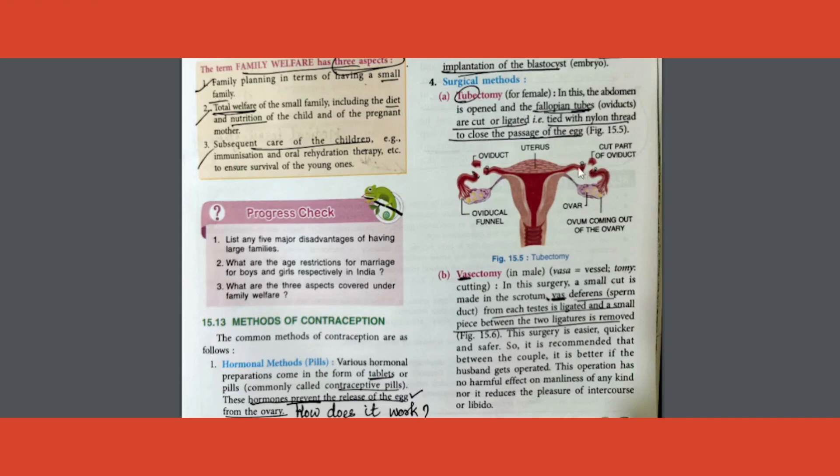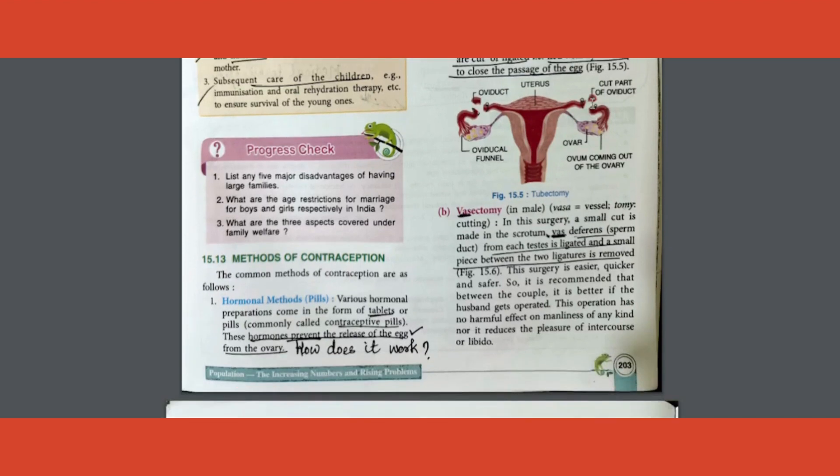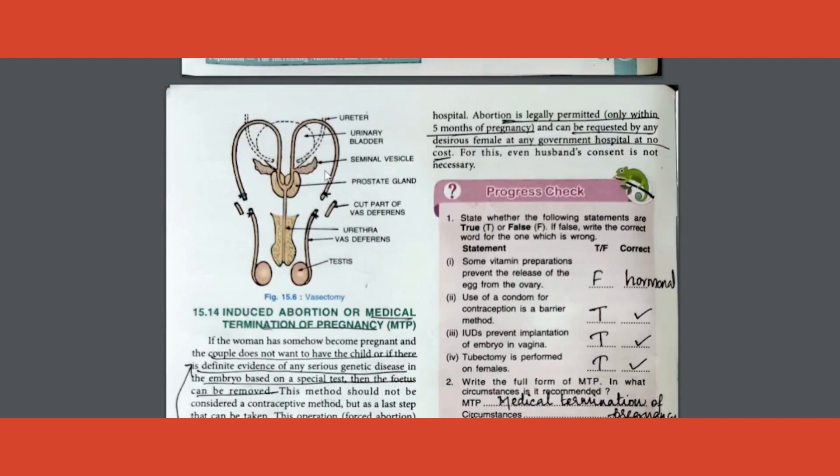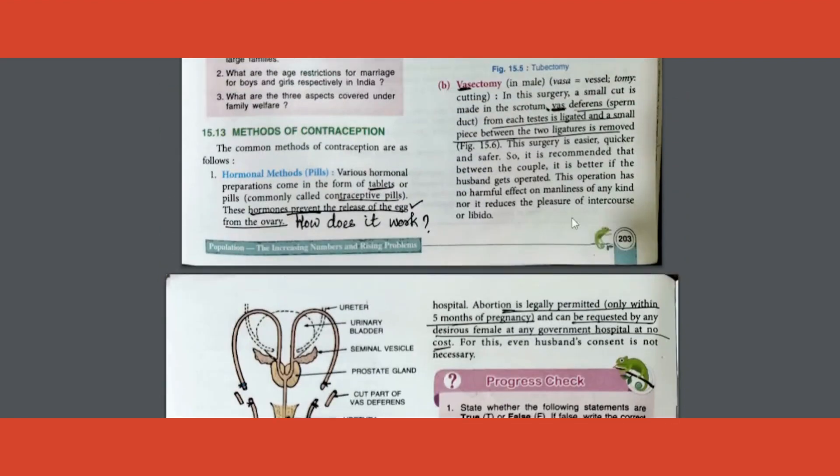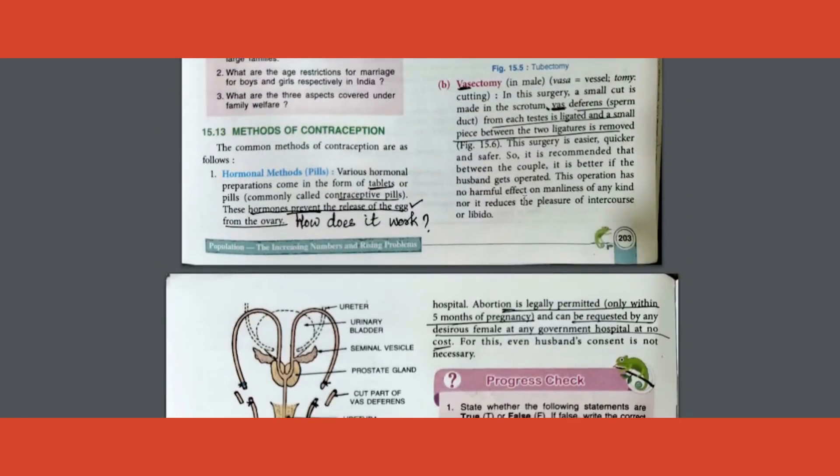The picture is just shown. In this case, fallopian tube. Other picture is there where they show the vas deferens or the sperm duct being cut and tied up. This part is removed, they tie up the rest. What is the purpose of it? So that the sperm cannot move through it, eventually resulting in contraception or prevention of pregnancy.